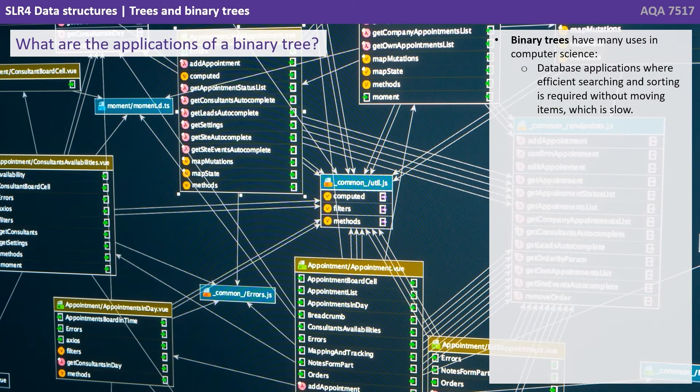So what are the applications of a binary tree? Well binary trees have many uses in computer science. Database applications where efficient searching and sorting is required without moving items which is slow.